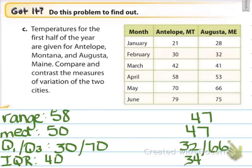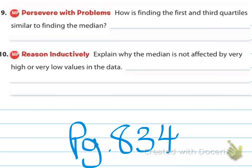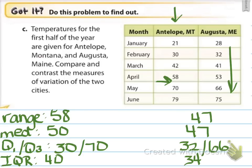The interquartile ranges are 40 and 34. The medians are close, but the Antelope temperatures are more spread out — going from low 20s, low 30s, low 40s, high 50s, low 70s, and high 70s, skipping the 60s entirely and jumping from low 40s to high 50s. Augusta is more gradual: high 20s, high 20s, low 30s, low 40s, low 50s, mid 60s, mid 70s. I hope you enjoyed the video with the other guy — whether he's British or not — and I'll see you in school!